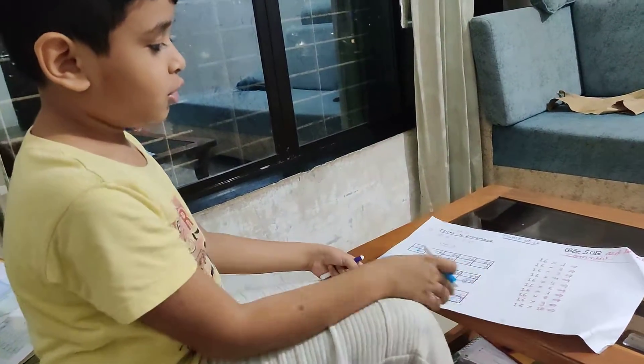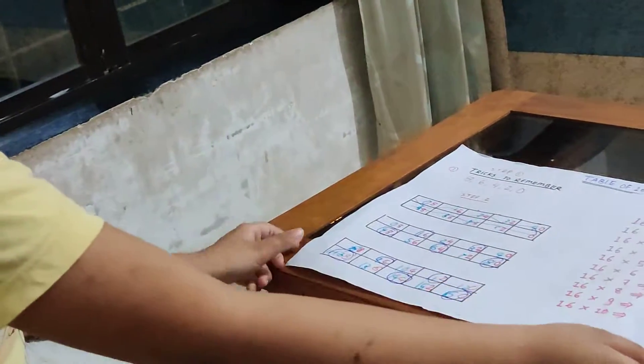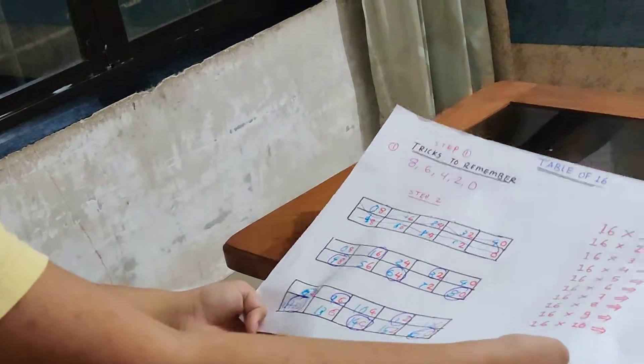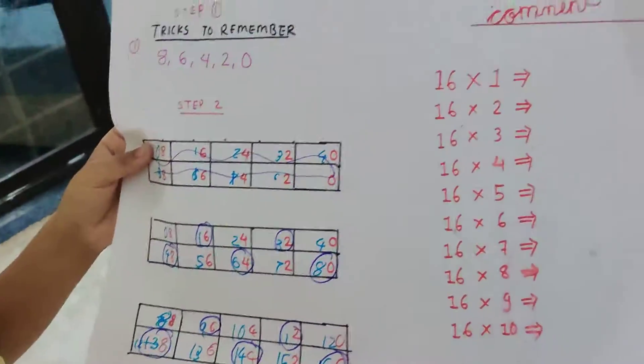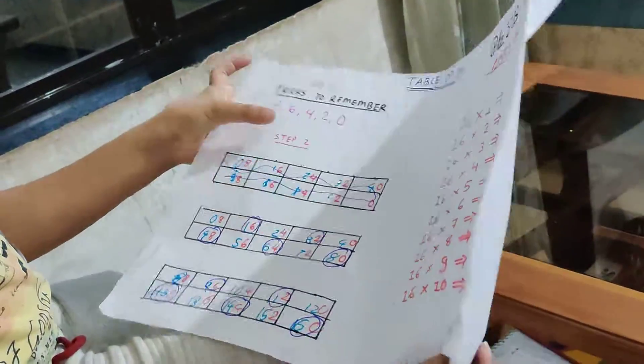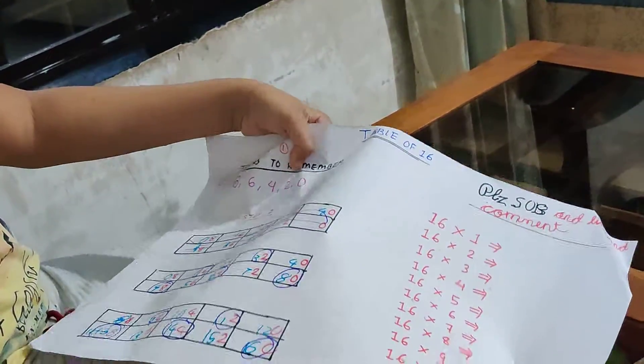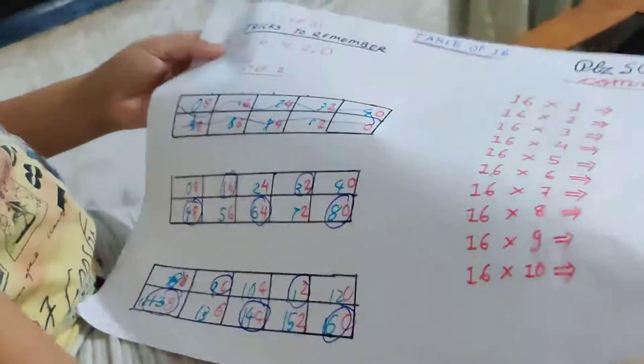Hi guys and welcome back to another video. Today I'm going to show you a trick to memorize the table of 16. So the first step is 8, 6, 4, 2, 0, and then write two columns, not three, just two.